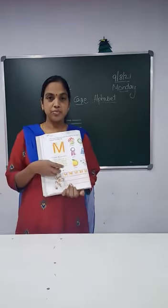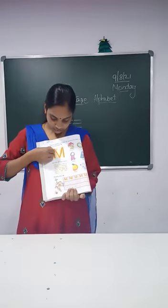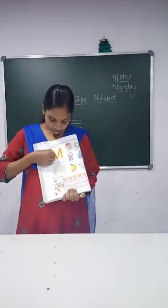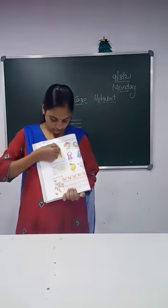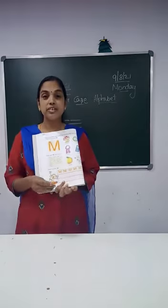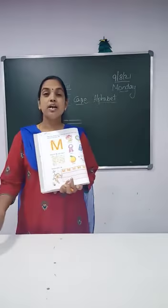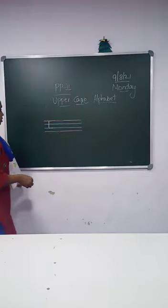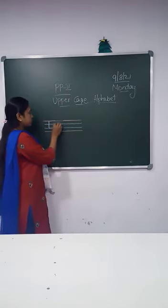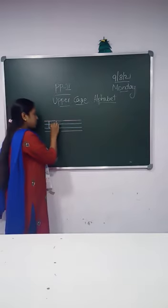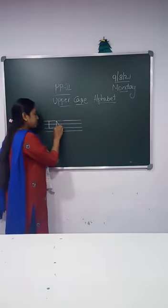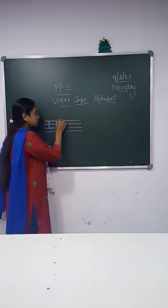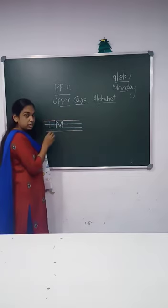Repeat after me. Standing line, right sliding line, left sliding line, standing line — letter M. Now come and take the crayons, write it in the four-line book. Standing line, right sliding line, left sliding line, standing line — letter M.